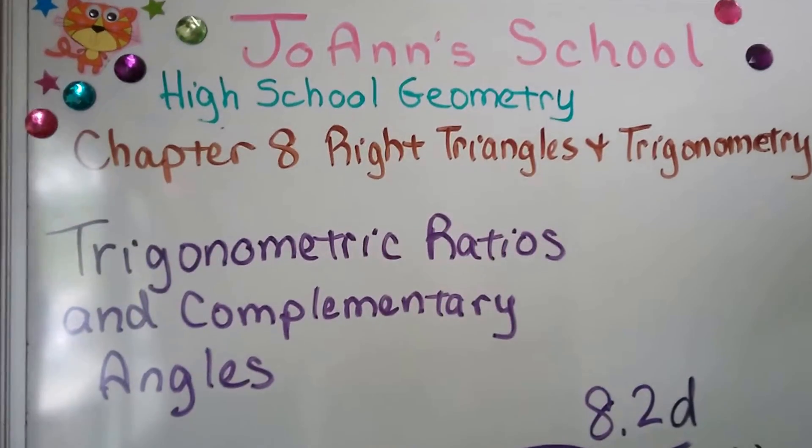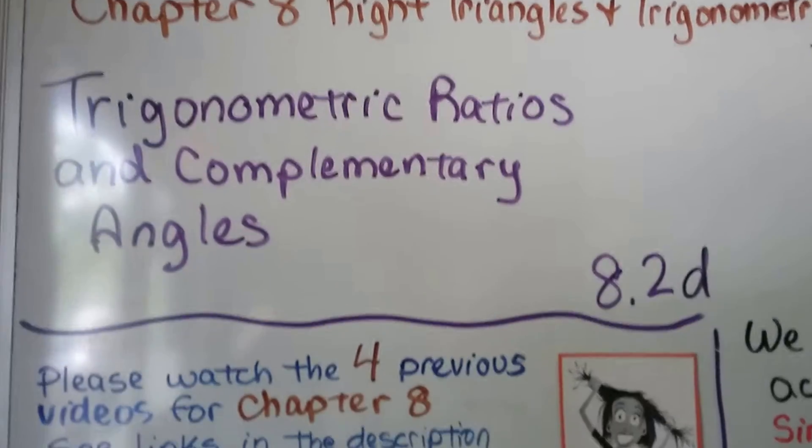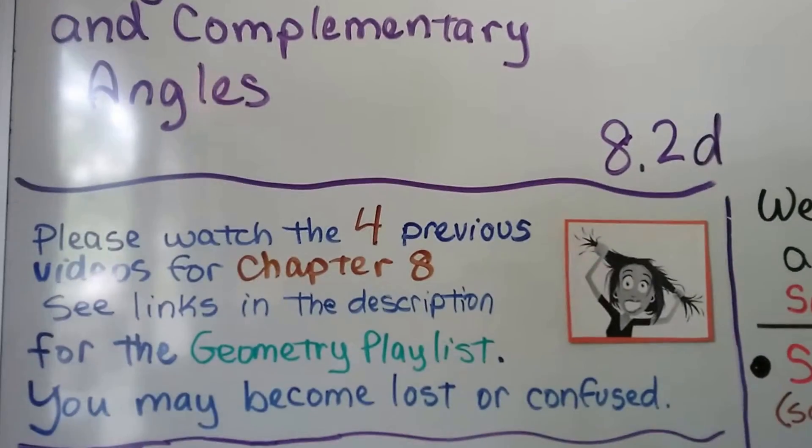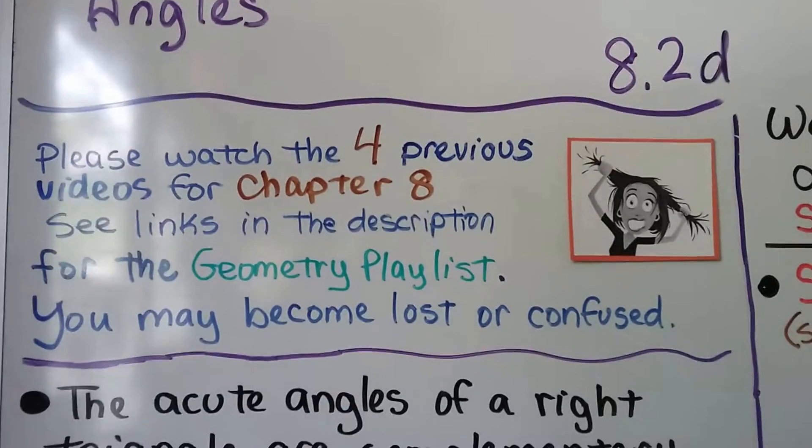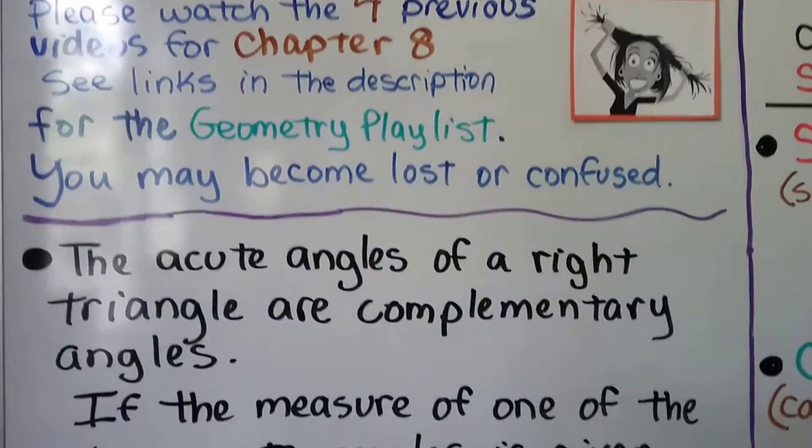Trigonometric ratios and complementary angles. We're at 8.2d. We have four previous videos for chapter 8 and three for this lesson alone. If you haven't seen them, you can go to the geometry playlist in the description and watch them.